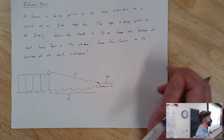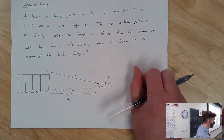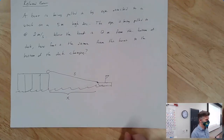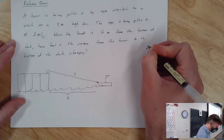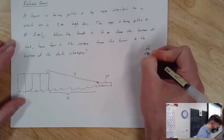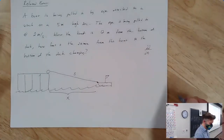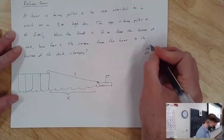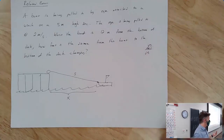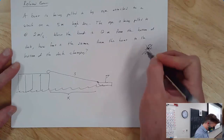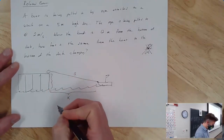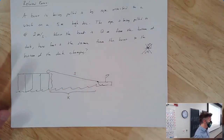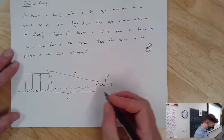People typically do not use d for distance. The reason is probably because no one wants to write dd/dt — it just looks weird. So we don't typically use that. And then this distance here is the height of the dock, which is not changing — that's just 5 meters.